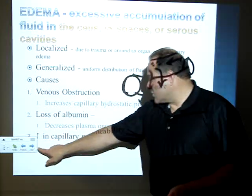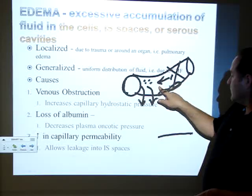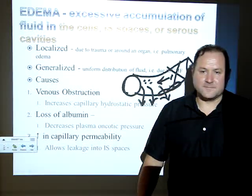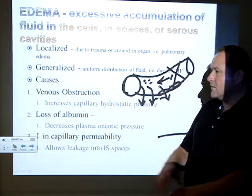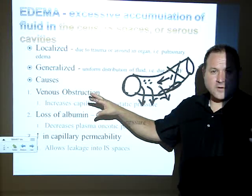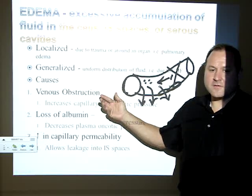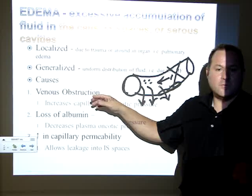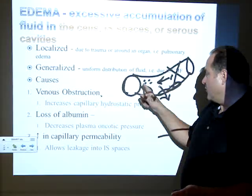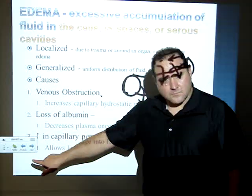Increased capillary permeability is another cause — if you have holes in your capillary walls, things leak out into the tissues that shouldn't. Your lecture notes break this up into increased movement out of a vascular structure, like with venous obstruction, versus decreased movement back into venous structures, like with loss of albumin — basically out or in.